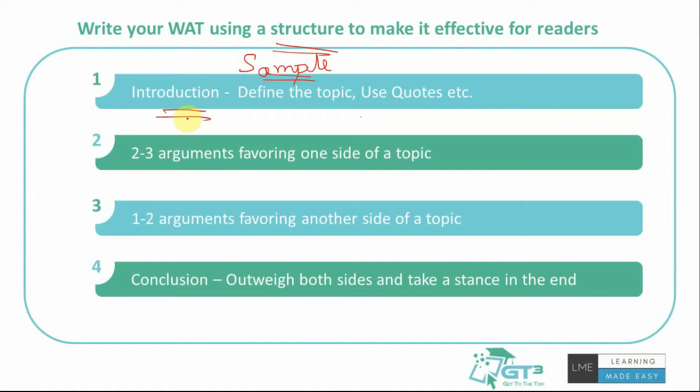For the introduction, you can pick a relevant quote — for example, Mahatma Gandhi's quote about real development being seen in rural parts. Then you can build on it by stating that 60% of the workforce in India is engaged in agriculture and based in rural areas. Alternatively, if the topic involves key jargons like HDI — Human Development Index — you can define the term in the introduction. The most important thing is to introduce the topic properly in the first paragraph so that even a reader unfamiliar with the subject can follow your arguments.